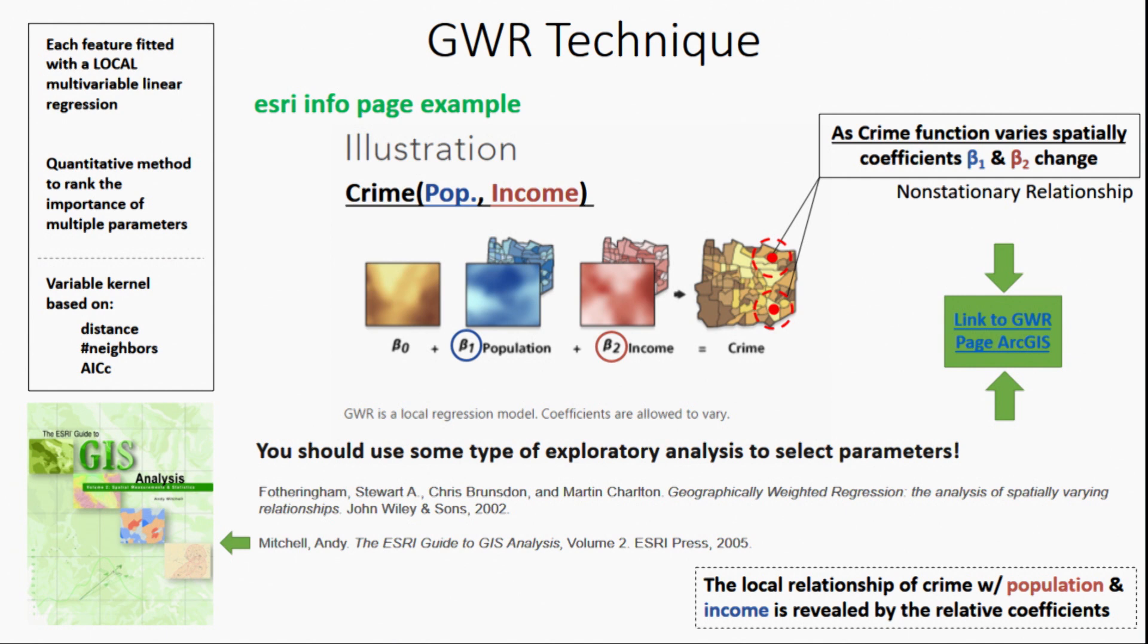The geographically weighted regression technique is a method where each feature is fitted with a local multivariable linear regression. It's a quantitative method to rank the importance of competing parameters. The Esri info page provides an example of crime as a function of population and income. As the crime function varies spatially, the coefficients beta 1 and beta 2 change. This is a non-stationary relationship. The local relationship of crime with population is revealed by the relative coefficients, and you can see this in our illustration here.